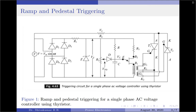Once the UJT is triggered and the thyristors are triggered, the capacitor starts to discharge and the capacitor voltage reduces to Vpd. It stays there as long as the input supply voltage Vs is greater than Vpd. After Vs becomes less than Vpd, the capacitor voltage reduces to zero, which occurs at ωt = π. The variation in triggering angle α is achieved by varying the pedestal voltage, which is done by varying the wiper position across R2.